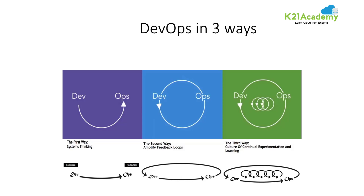Systems thinking means you consider the whole system. For example, if you have a production system running on Java 8 and your development team has a new requirement to use Java 12 for a new feature, while designing or developing code, developers have to think about the system first — is my current Java 8 production environment going to be compatible with Java 12?